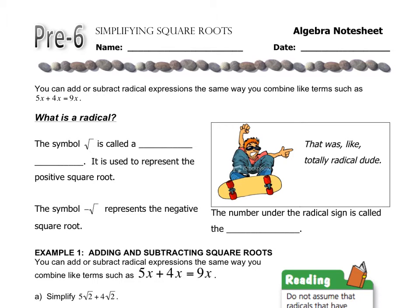Pre-6 is actually not a lesson in our algebra book. It's actually lessons from chapter 16 of your accelerated red book, but a lot of times kids don't remember or they never got to chapter 16. So we incorporate this lesson so that way you can be successful in chapter 6, because you need some skills from that chapter in this chapter 6.